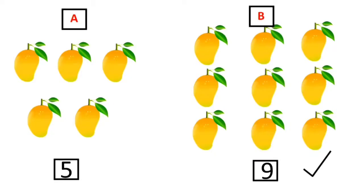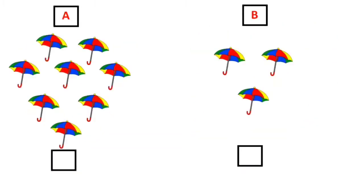Let us move to another example. Here you can see 2 sets of umbrellas. Let us count the number of umbrellas present in set A. 1, 2, 3, 4, 5, 6, 7 and 8.